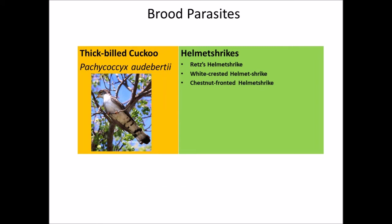The Thick-billed Cuckoo includes all helmet shrikes as hosts — the chestnut-fronted, white-crested, and Retz's helmet shrike. So if those birds are present in an area, they are likely to be parasitized by the thick-billed cuckoo.